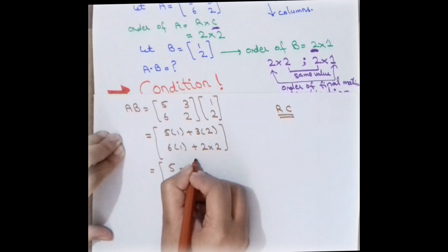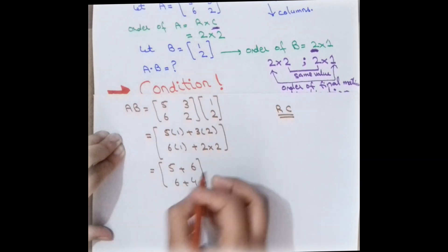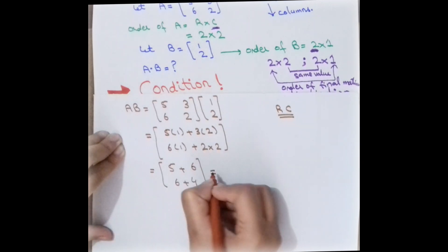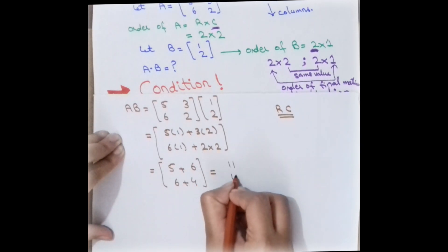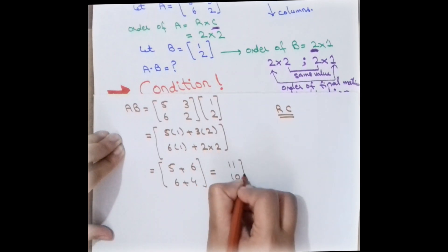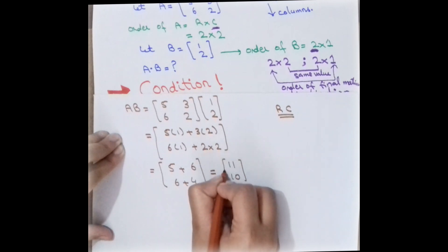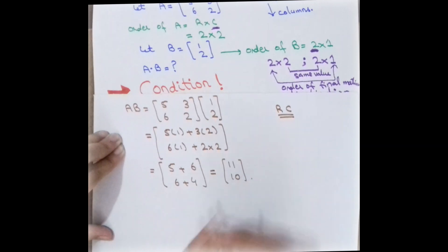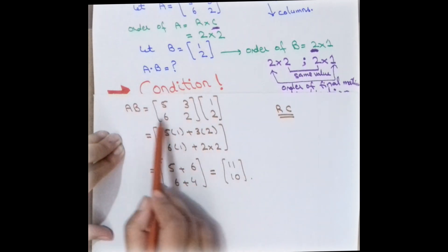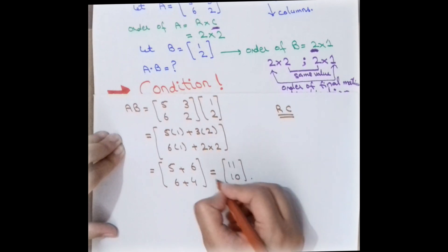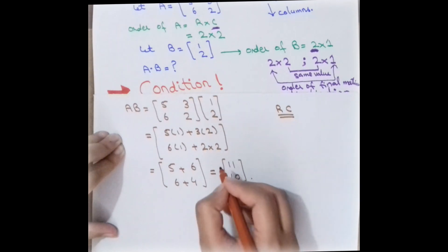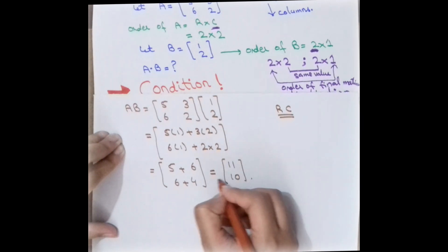Simplifying: 5 plus 6 equals 11, and 6 plus 4 equals 10. So the final matrix is [11; 10]. This is the result when these two matrices are multiplied, and the order of the final matrix is 2 by 1.